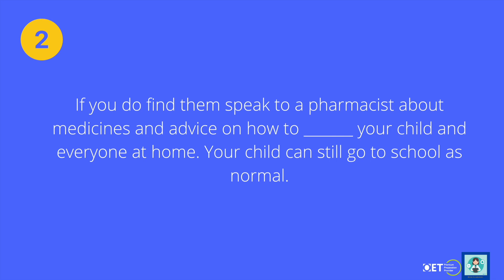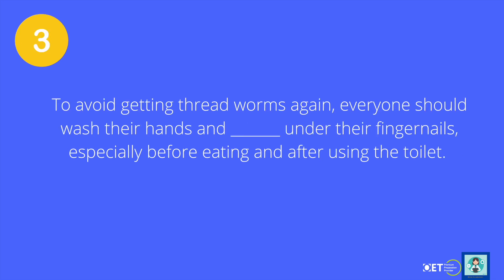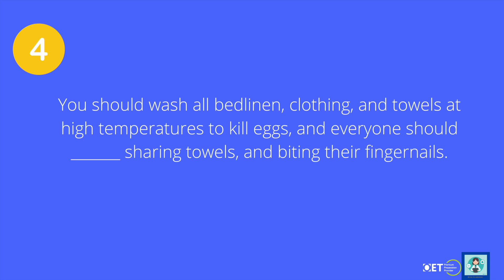Your child can still go to school as normal. To avoid getting threadworms again, everyone should wash their hands and scrub under their fingernails, especially before eating and after using the toilet. You should wash all bed linen, clothing and towels at high temperatures to kill eggs. And everyone should avoid sharing towels and biting their fingernails.